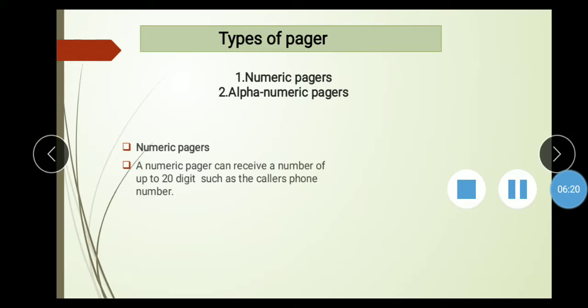These pagers can display one line of up to 20 digits such as caller phone number. We can use it just 20 digits in numerical pagers. They can receive only numbers. In numerical pagers, we can receive only numbers.